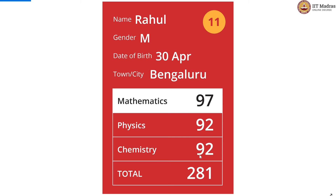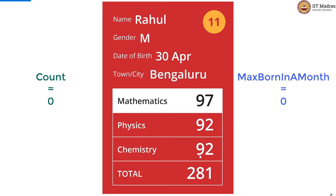For this, like the professors, we first define a variable called max_born_in_a_month and initialize it to 0. Then we need another variable, the count variable, which we also initialize to 0.